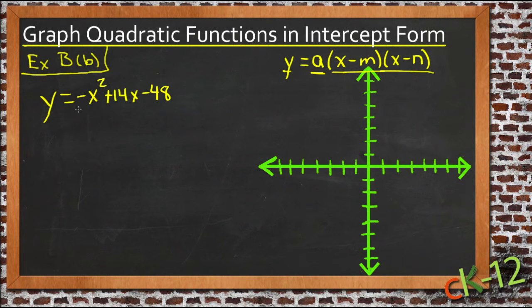This function here needs to be factored on the right hand side in order to match our intercept form. So the first thing we need to do is factor this trinomial. Now you don't have to pull out the negative. Usually our first term here is positive. You don't have to pull that out right away, but it does tend to make things easier. So I'm going to go ahead and do that.